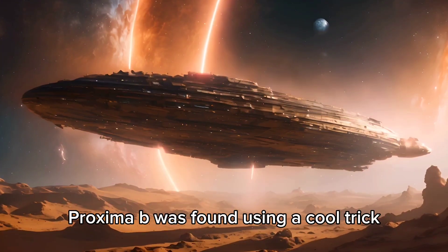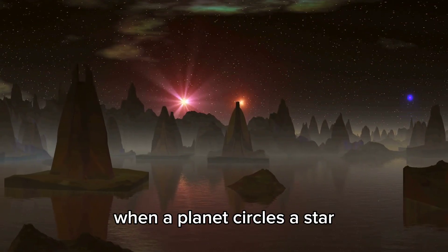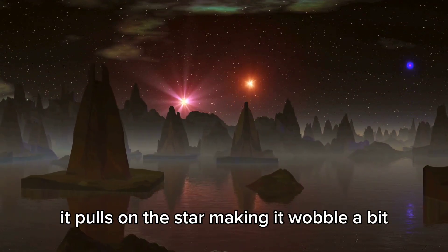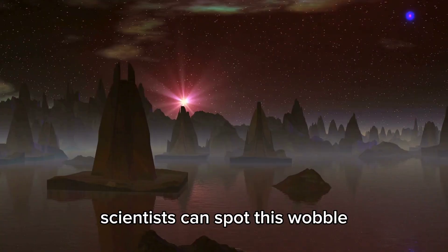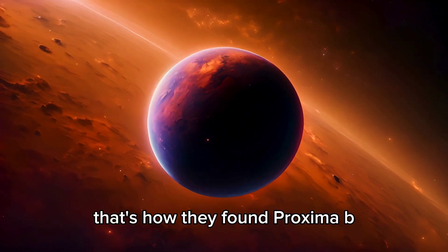Proxima b was found using a cool trick called the radial velocity method. When a planet circles a star, it pulls on the star, making it wobble a bit. Scientists can spot this wobble by studying the star's light. That's how they found Proxima b.